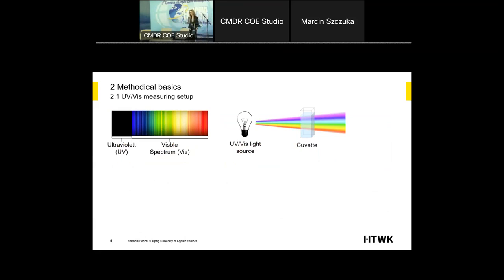Now to the methodical basics — the UV-Vis measurement setup. UV stands for ultraviolet, illustrated in black, while the visible spectrum shows the colors of the rainbow. We use a UV-Vis light source and let it shine through a cuvette. If we have pure water inside, nothing happens. But if we have a substance or pollution inside, part of the beam gets absorbed. Which wavelengths get absorbed tells us which substance is inside the cuvette, and the level of absorption leads us to the concentration of the substance.